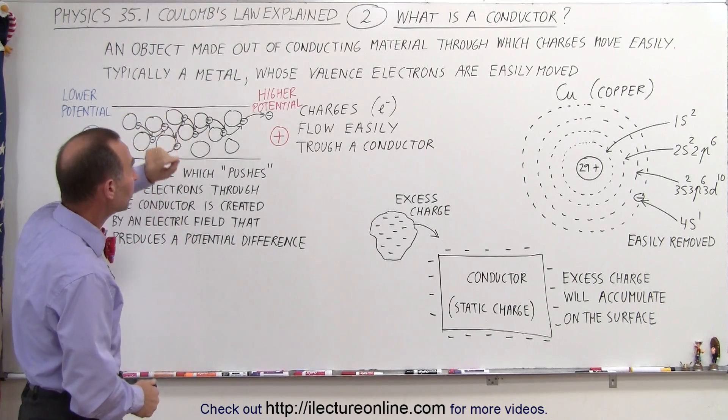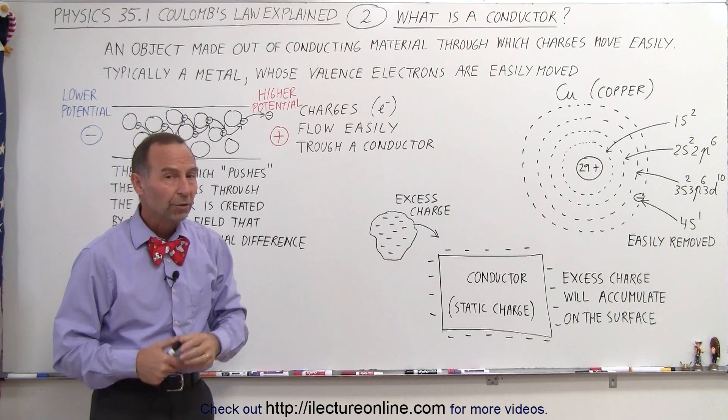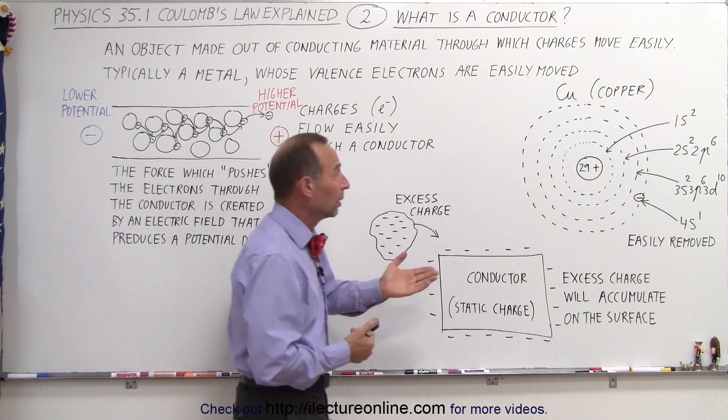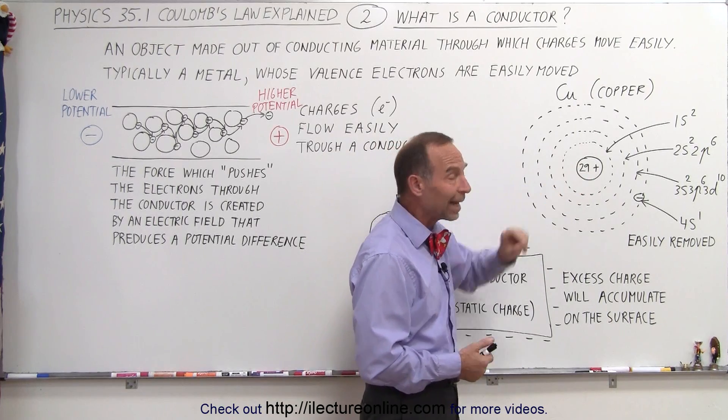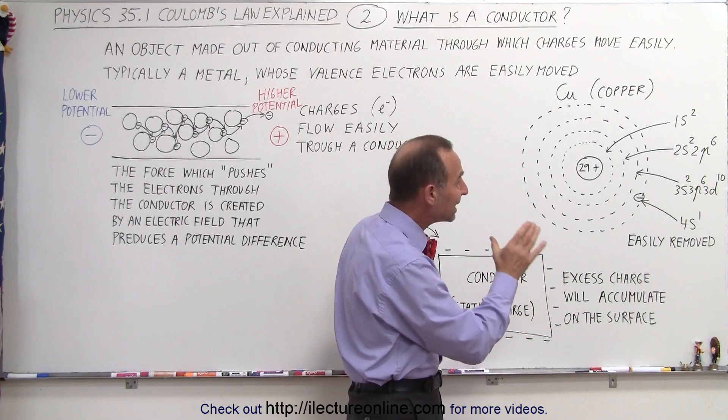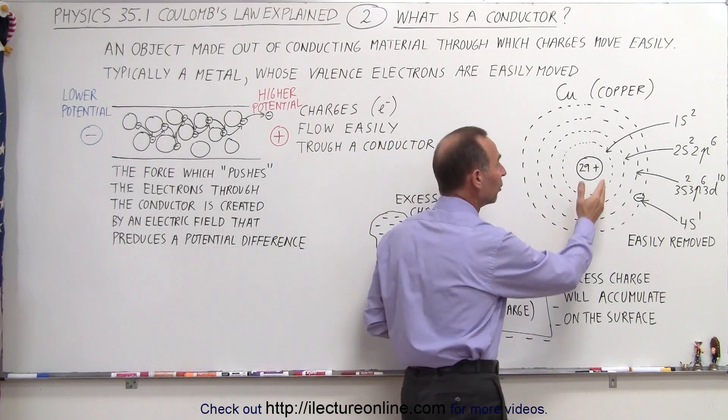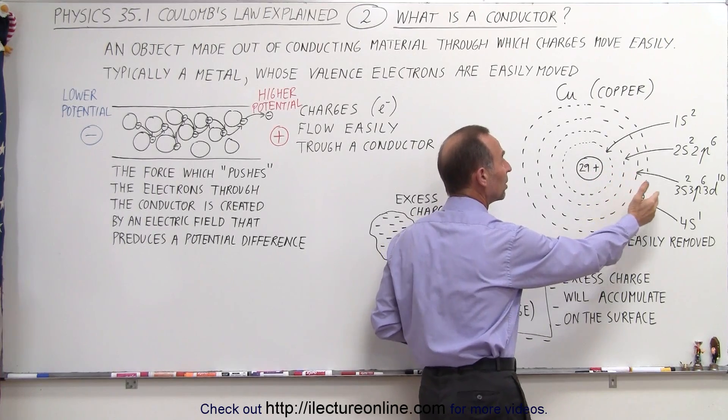Typically a conductor is made out of a metal whose valence electrons are easily moved. For example, copper. With copper we have a nucleus that has 29 protons and around it we have 29 electrons. The first 28 electrons occupy the first three energy levels, n equals one, n equals two, n equals three, in such a way that the orbitals are filled.